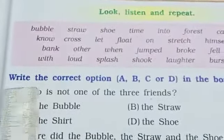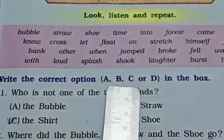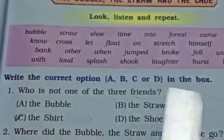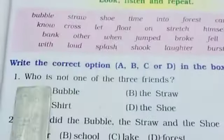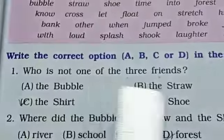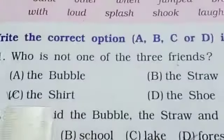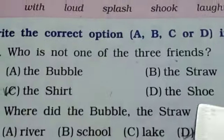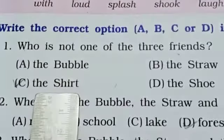Exercise No. 1. Write the correct option A, B, C or D in the box. No. 1. Who is not one of the three friends? A. The bubble, B. The straw, C. The shirt, D. The shoe. Correct answer is C, the shirt.